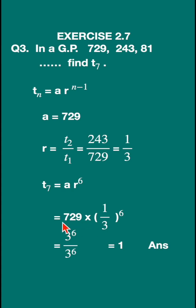Now, if you factorize 729, you will get 3^6 multiplied by (1/3)^6. So 3^6 will cancel, and the answer is 1.